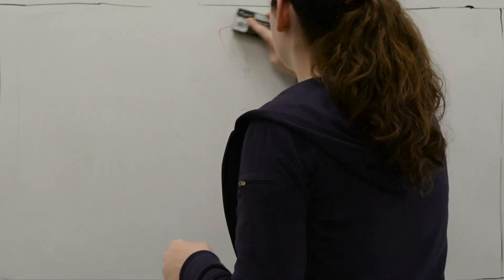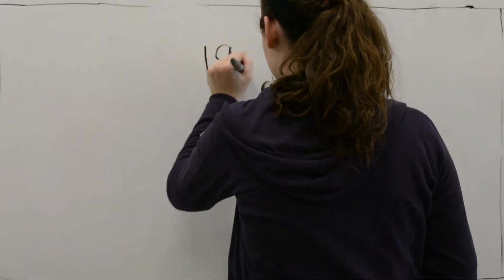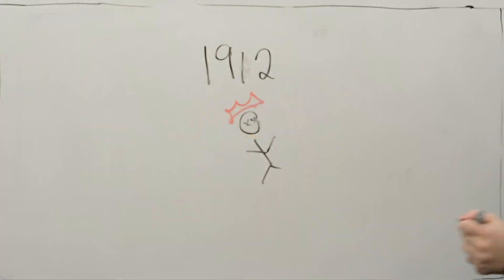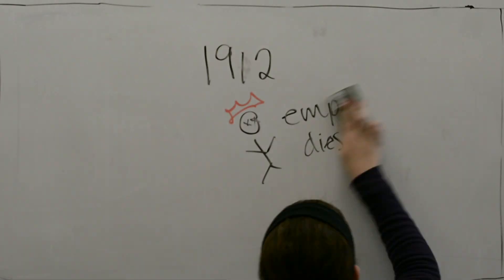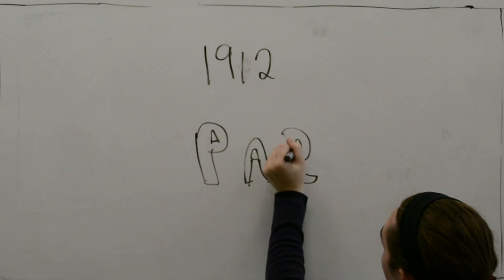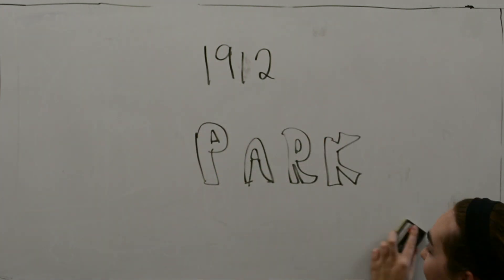Japan had become a modern power. Fun fact: the Meiji Emperor died the same year as the park school was founded. Coincidence?